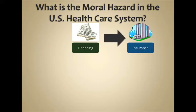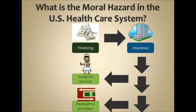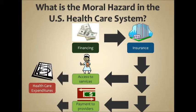We find a way to pool money and give it to insurance companies. Those insurance companies then set up two things: access to services — they pick providers and set up contracts with them — and then they pay those providers when we go to them. So the financing goes to the insurance, the insurance sets up the providers and pays them, and that is how we get healthcare expenditures.